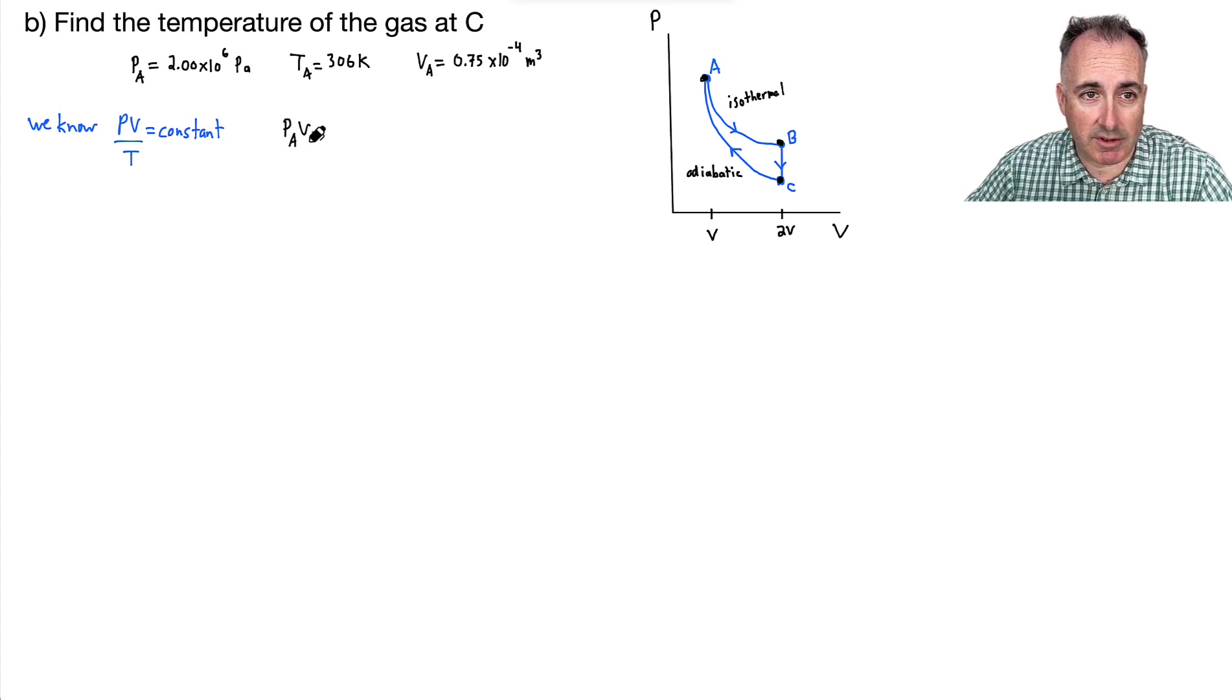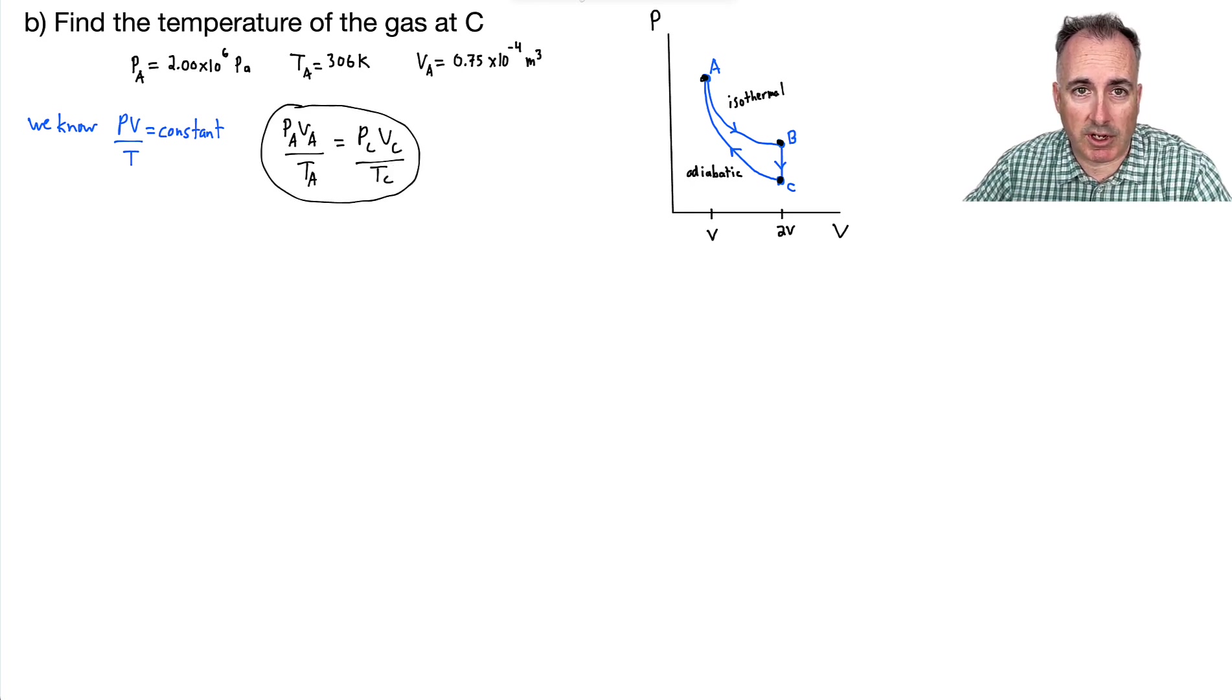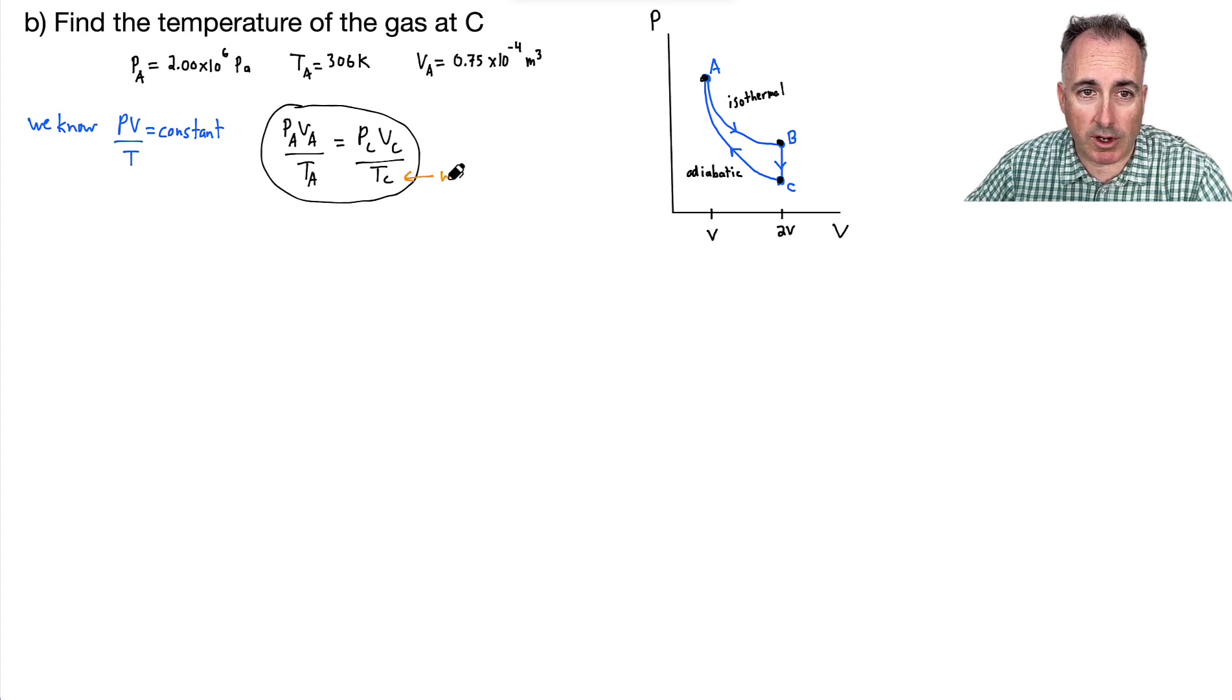So we know that PV over T equals constant. Why does that help us? Well, because then we can say that if we know, because we're trying to find out what is the temperature at C. And we're just given stuff at A. But that's actually okay. Because see, we can say that PA times VA over TA. That must be equal to P at C, V at C over temperature at C. And why is this important?